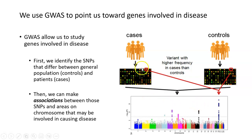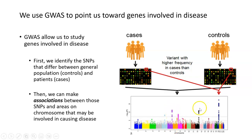Once we know which SNPs are more common in the case group over the control group, we can visualize that on a plot like this Manhattan plot. You can see individual chromosomes 1 through 22 from left to right, and SNPs that are increased in the cases versus the controls appear vertically off the x-axis. The higher those dots go, the more SNPs are found at that particular location in the genome. Here we can see a lot of SNPs on chromosome 6, chromosome 12, and chromosome 19.